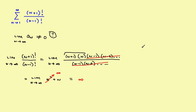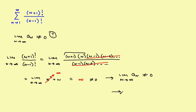Infinity is not equal to zero. So we've shown that the limit of the sequence as n approaches infinity is not equal to zero — it approached infinity, which is not zero. Therefore, since that limit is not equal to zero, the series diverges, and you're done.